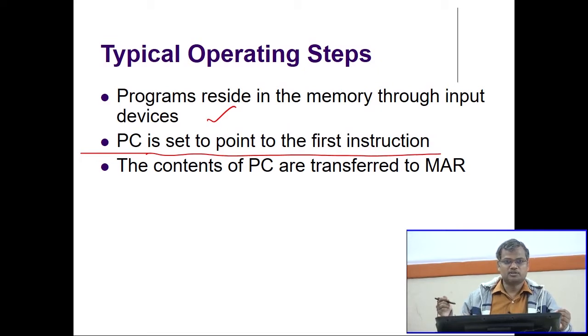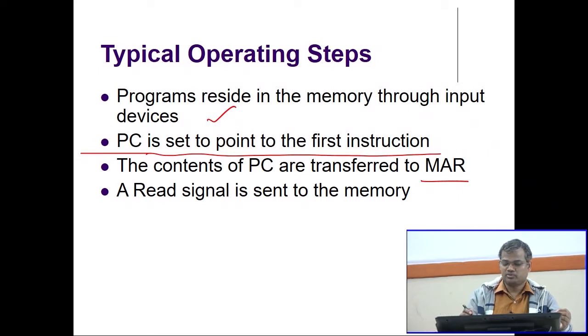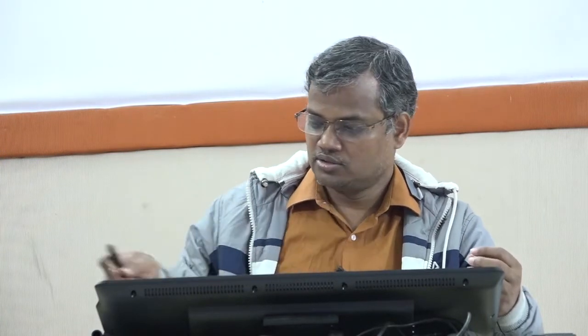Then the contents of the program counter are transferred to the MAR — the memory address register. Next, a read signal is sent to the memory. Why a read signal? Because processing happens in the ALU and the control unit keeps the timing signal. Therefore, the processor should bring the information from the memory to the processor — this is a read operation — and it issues the read signal.